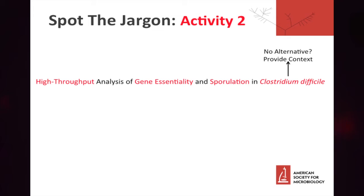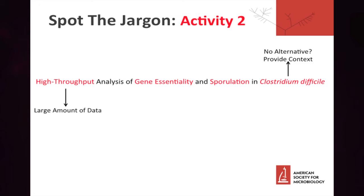Sometimes in microbiology, we use terms that there's really no good alternative for. In this case, we need to provide some context for our audience. We can point out that Clostridium difficile is a pathogen or disease-causing organism. Now let's go back to the beginning and look at 'high throughput.' High throughput means that we're working with large amounts of data, which in turn is a way to improve the rigor of our analyses. Moving on, let's look at gene essentiality — basically what we're talking about here is whether or not a gene is essential.